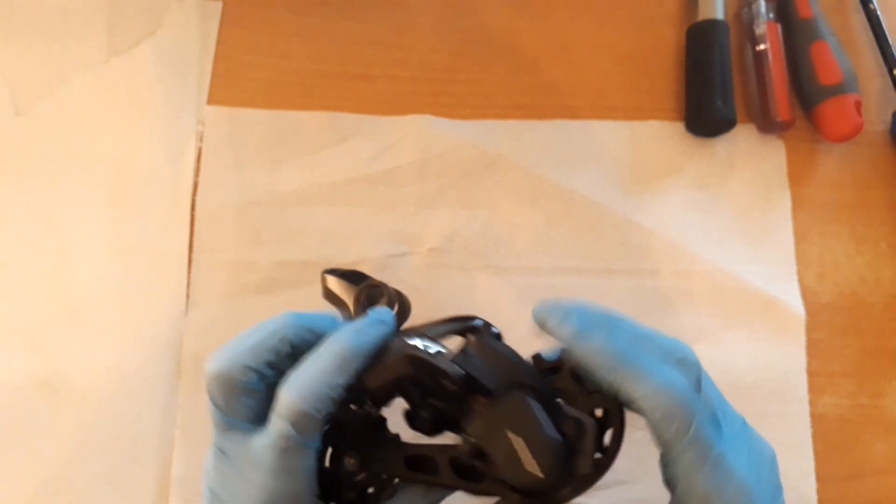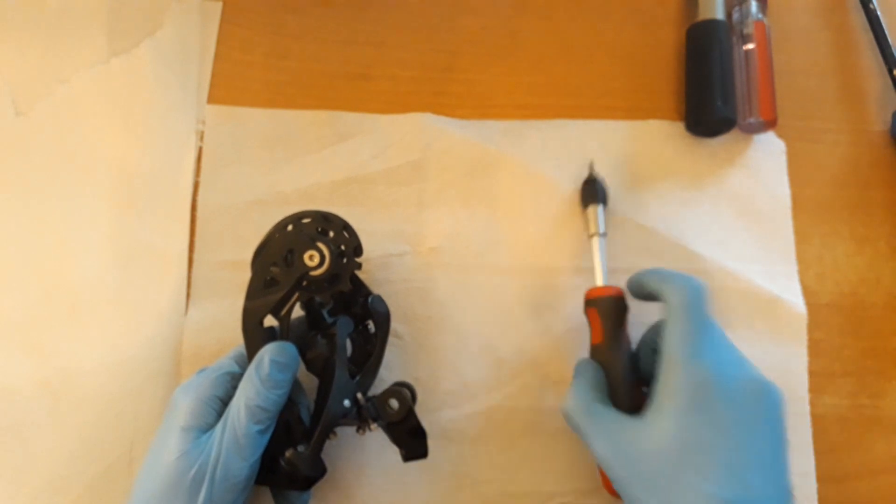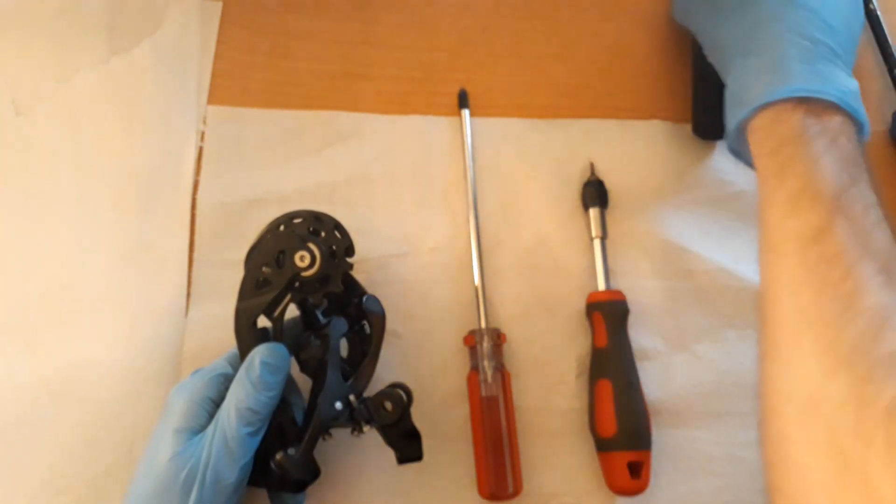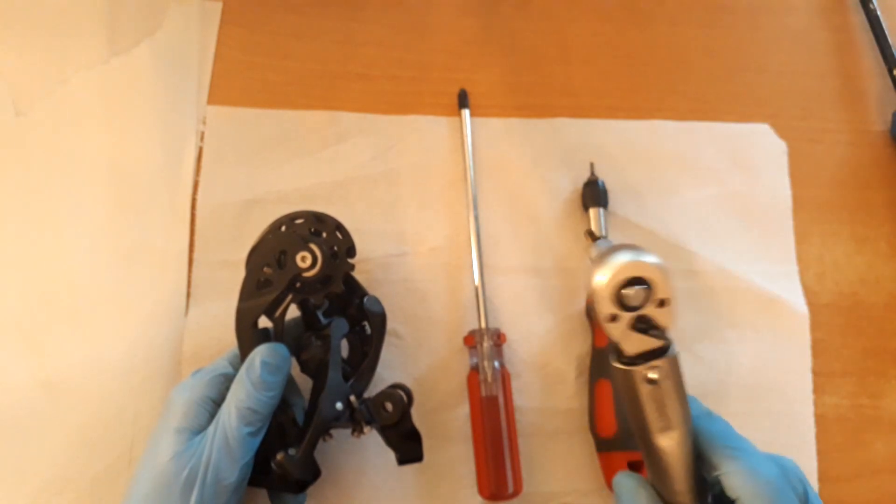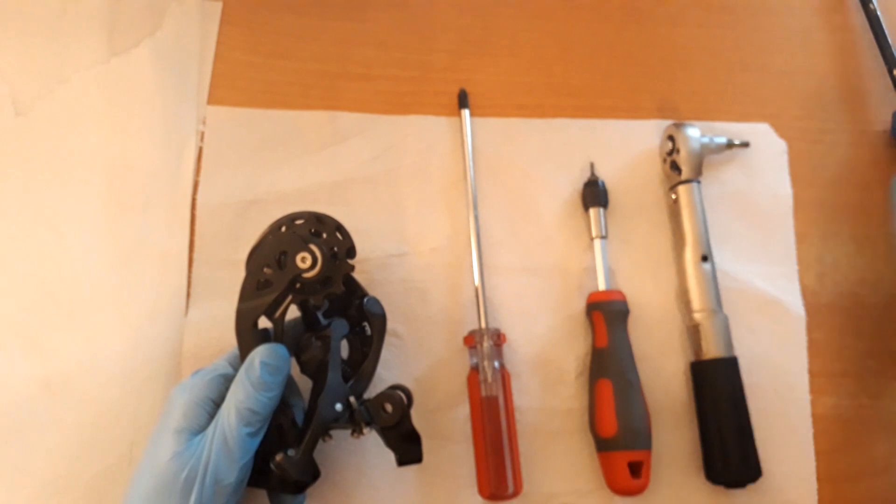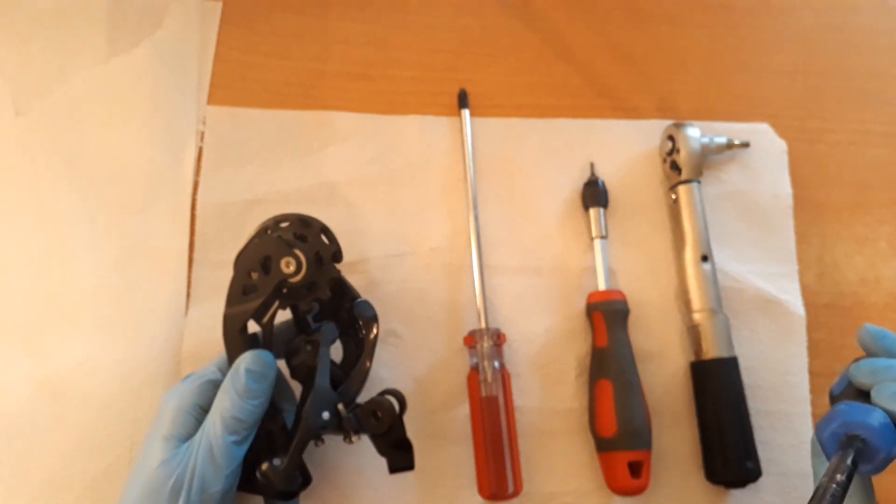So the tools you are going to need for this are a 2mm Allen key or hex key, a Phillips screwdriver, a 4mm Allen key, preferably with a torque wrench, and I'm also using a large screwdriver which you'll see later why.